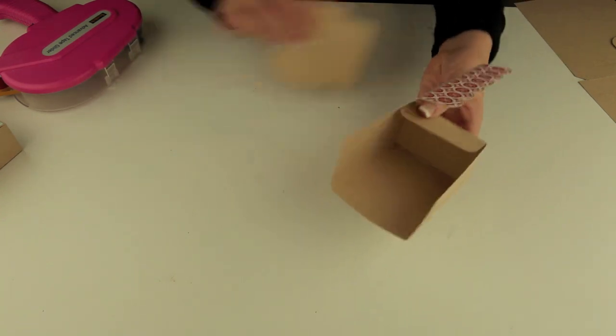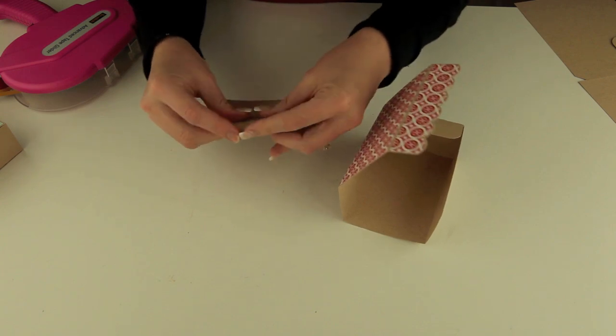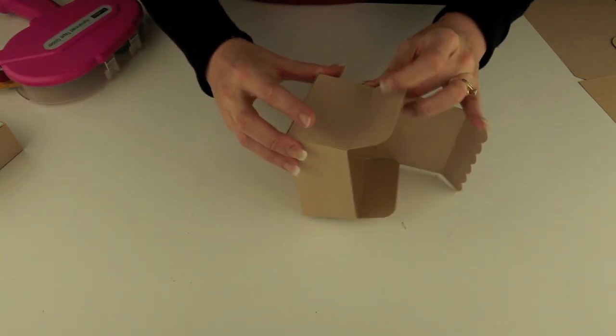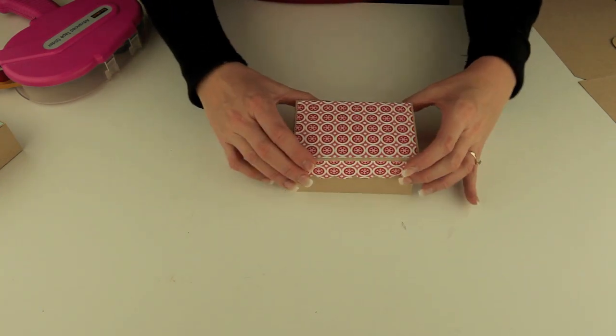Now we just need to do the same thing for the other side. I'm going to go ahead and fold those glue tabs. Now the second box is complete. We'll set it aside.